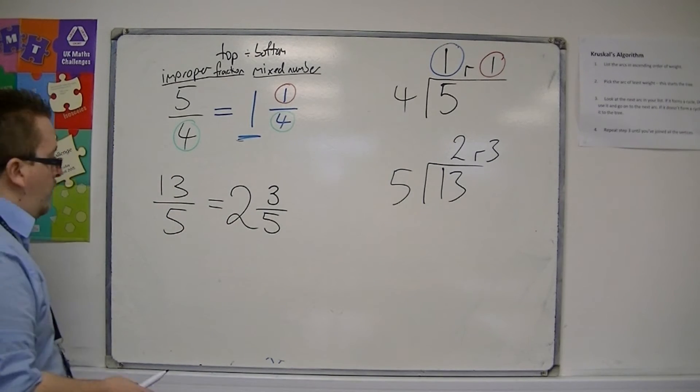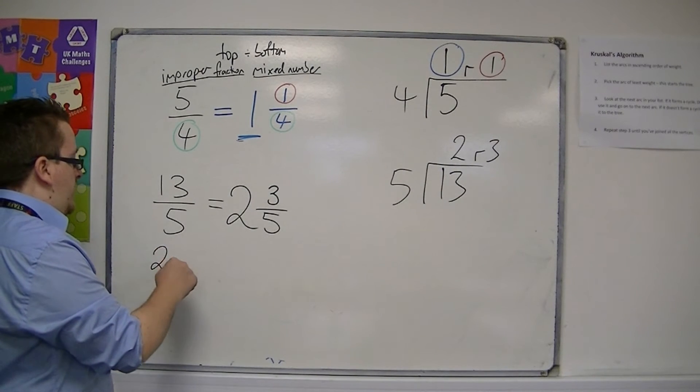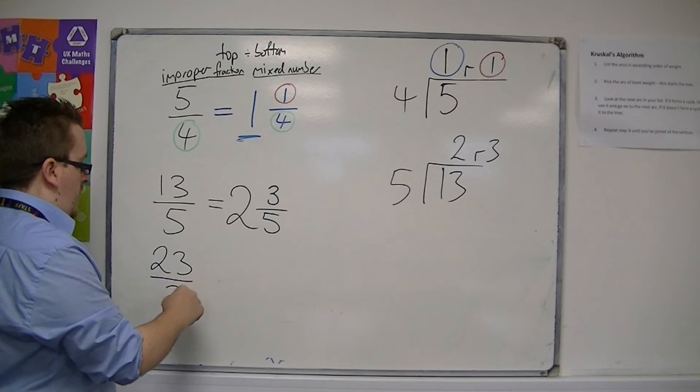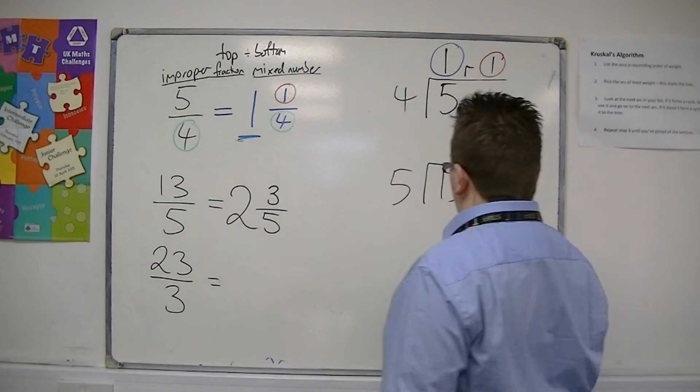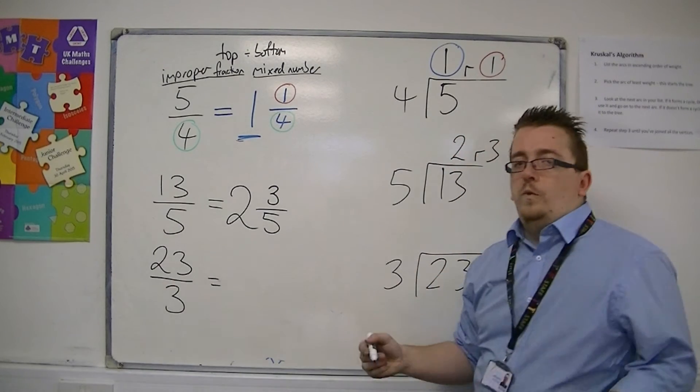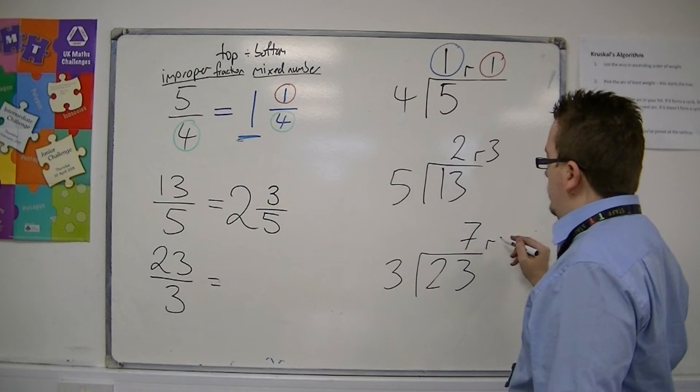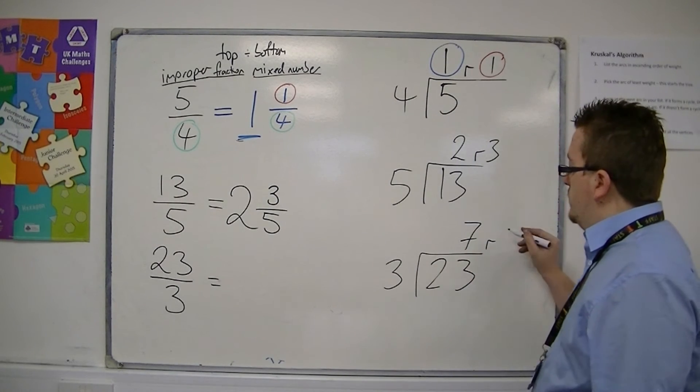Let's go through one more. Let's try something like 23 over 3. So 23 divided by 3, we get 7, remainder... well, 3 sevens is 21, so we get remainder 2.